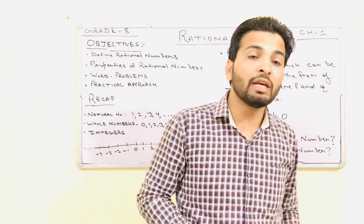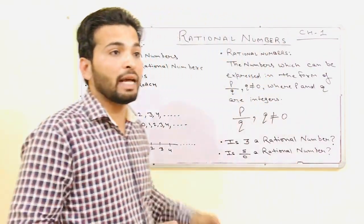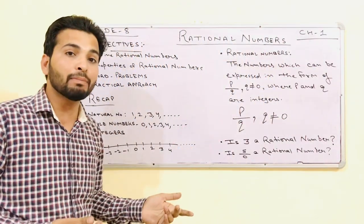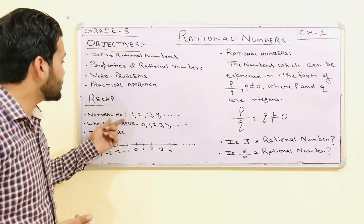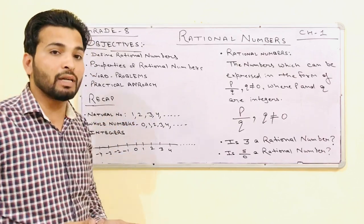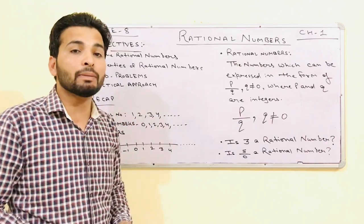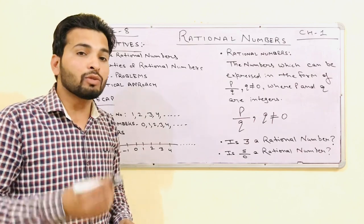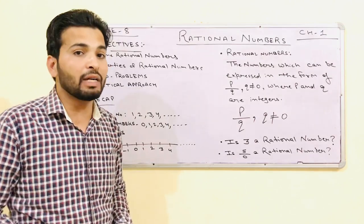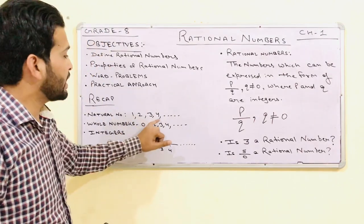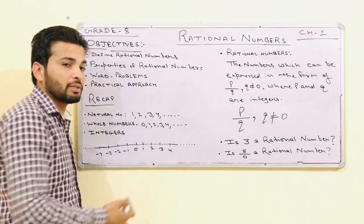In grade 6 and grade 7, we have done so many definitions of numbers in the number system chapter. First are natural numbers. The numbers which start from 1 and go to infinite are known as natural numbers.